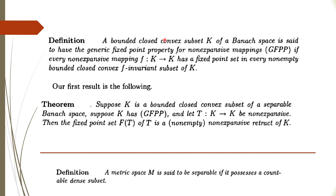Based on this, we have a result: suppose K is a bounded closed convex subset of a separable Banach space and suppose K has the generic fixed point property. Let T be a non-expansive mapping going from K to K. Then the fixed point set of T is a non-empty non-expansive retract of K. This follows by the previous theorem, but here we use separability. A Banach space, metric space, or topological space is said to be separable if it possesses a countable dense subset. This theorem can be proved with the help of the previous theorem.